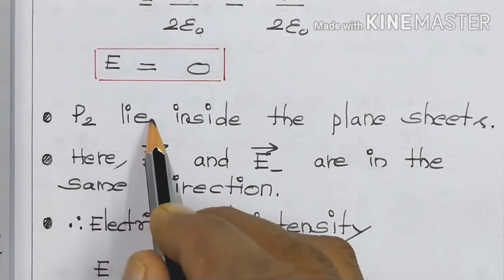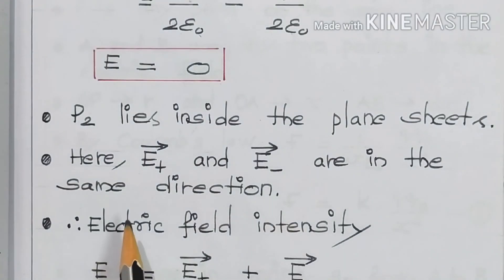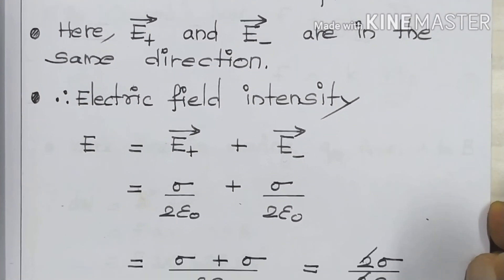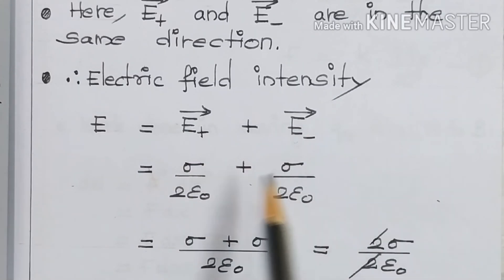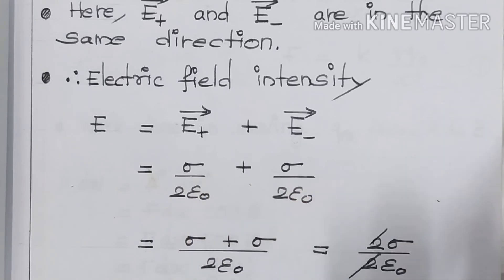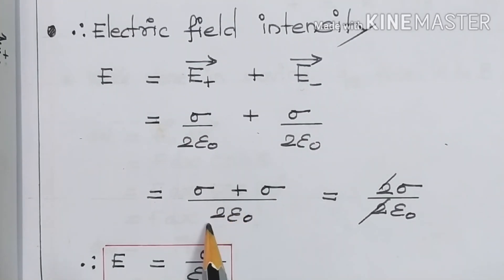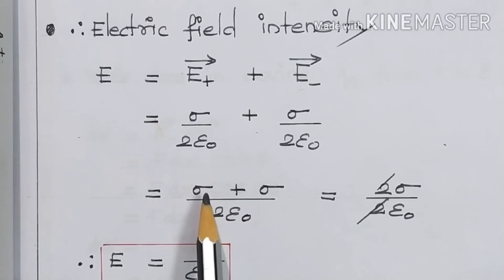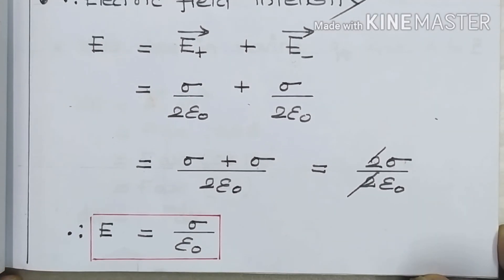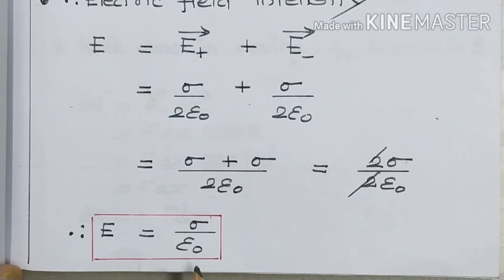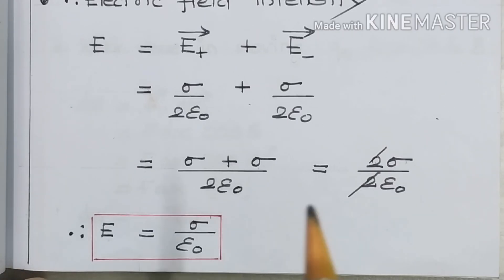P2 lies inside the plane sheets. Here E-plus vector and E-minus vector are in the same direction. So electric field intensity E = E-plus + E-minus = σ / 2ε₀ + σ / 2ε₀. Taking 2ε₀ as the common denominator, σ + σ = 2σ, so E = 2σ / 2ε₀. The 2s cancel, giving the final expression E = σ / ε₀. This is the electric field intensity at a point lying between the two infinitely long, oppositely charged plane sheets.